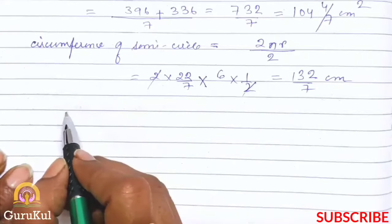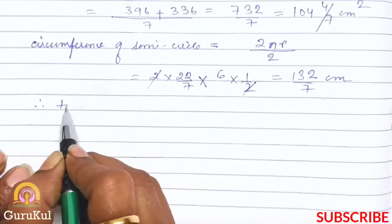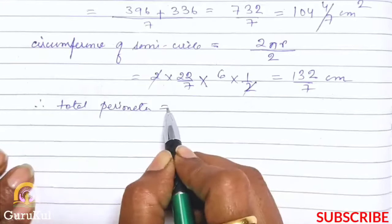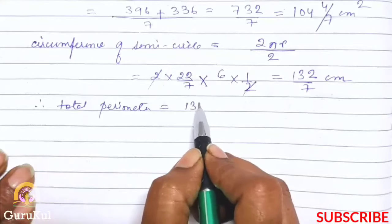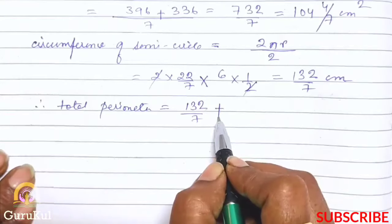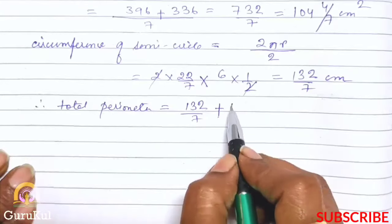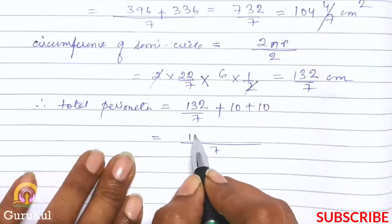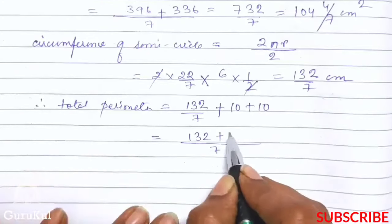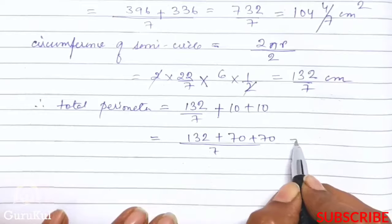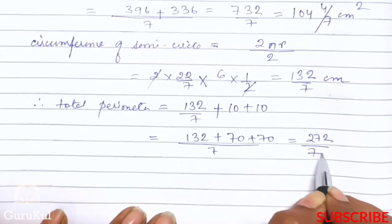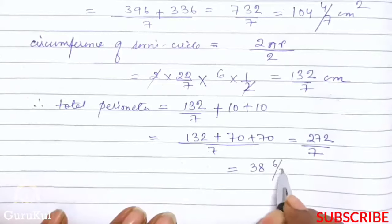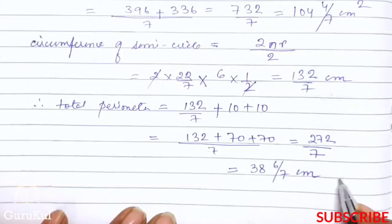Therefore total perimeter is equal to semicircle ka circumference which is 132 by 7, plus the triangle's one side is 10 plus 10. Taking LCM: 132 plus 70 plus 70 gives us 272 by 7. Writing as a mixed number: 38 and 6 by 7 centimeter. So this is the answer.